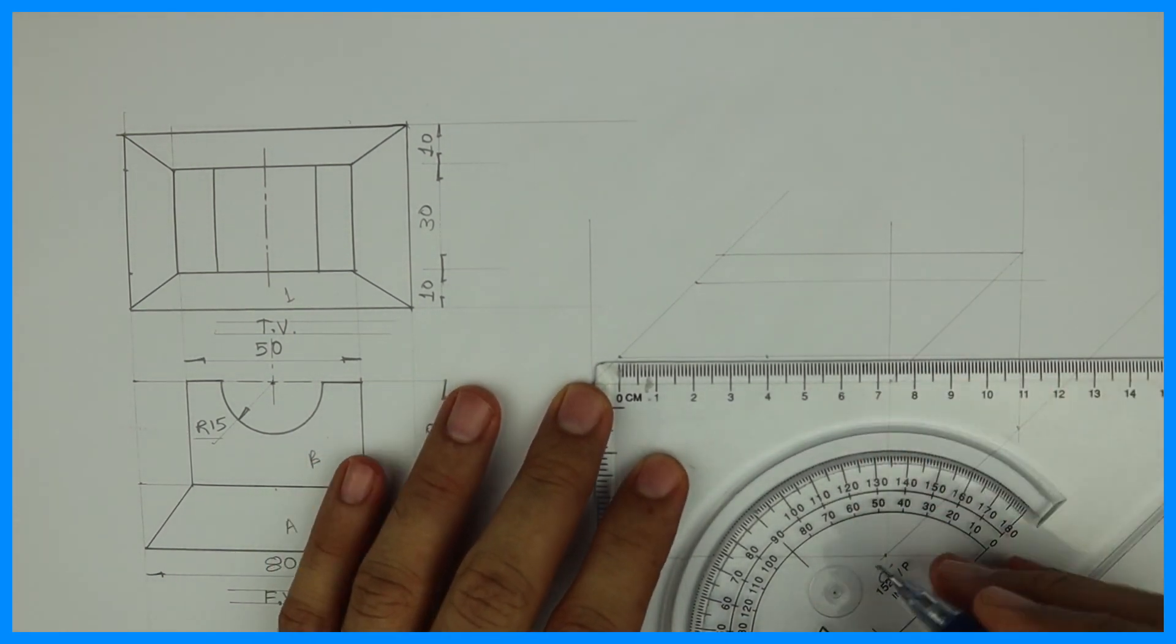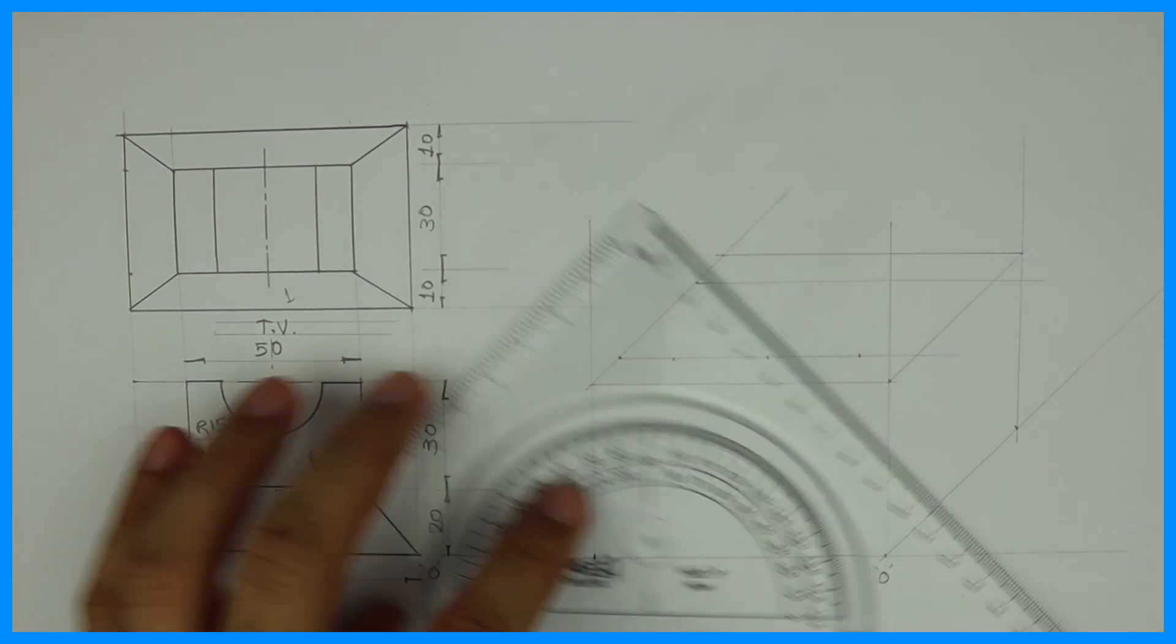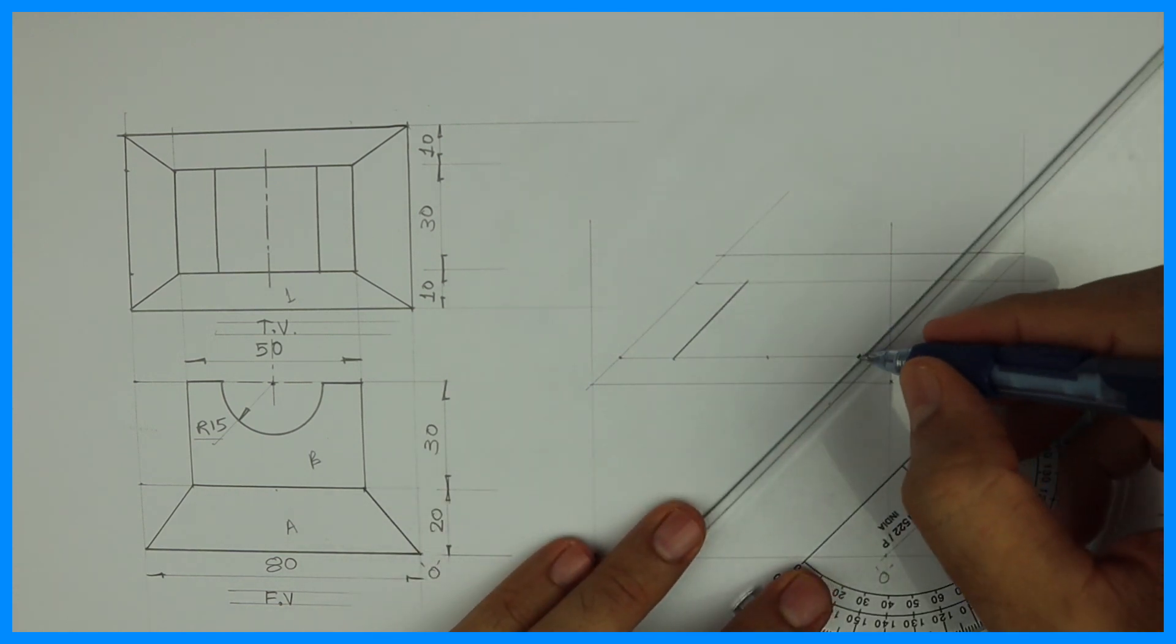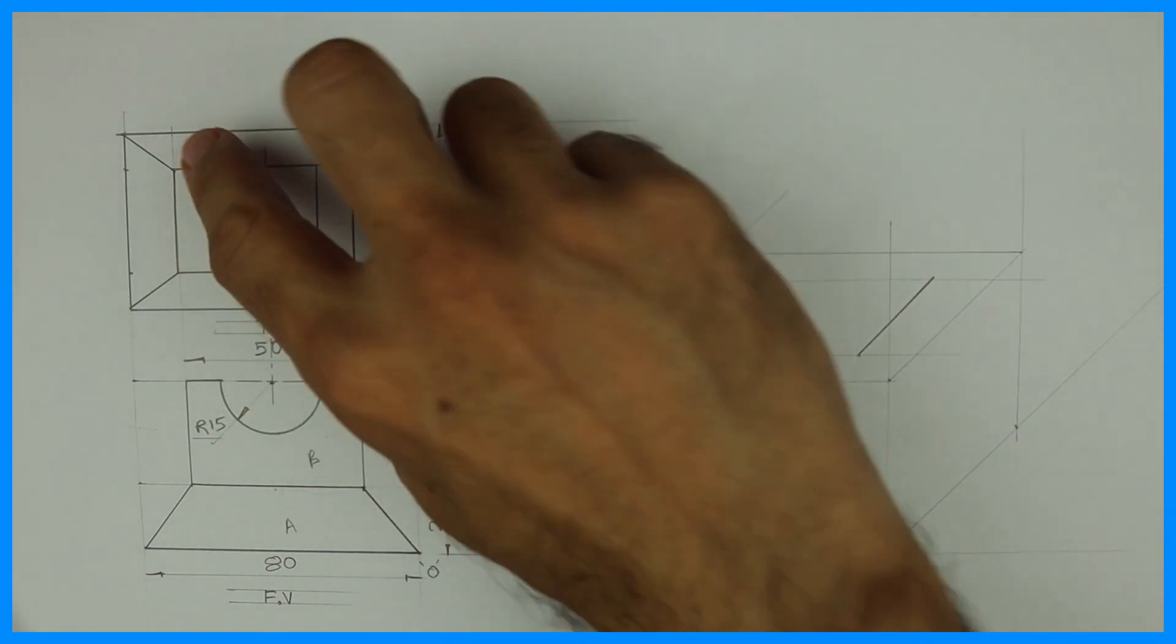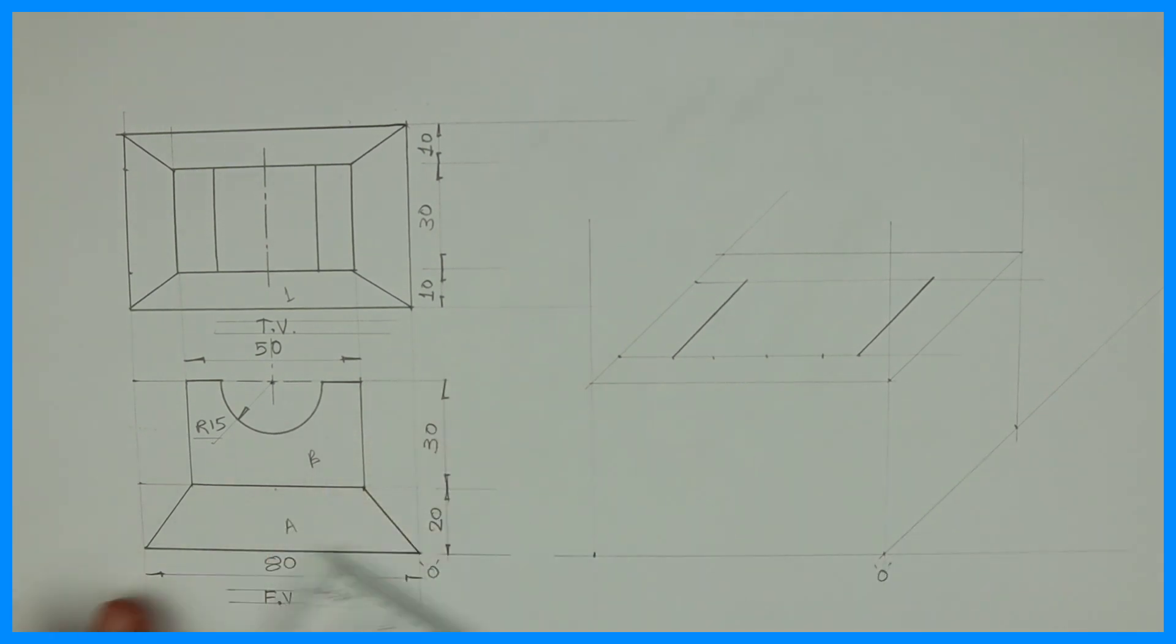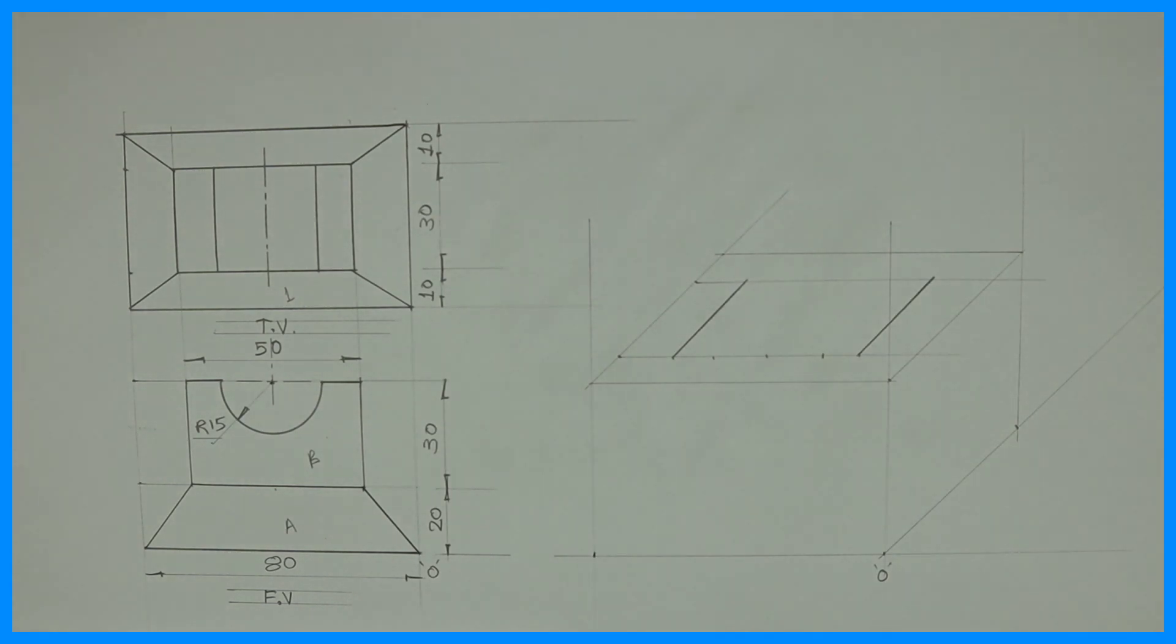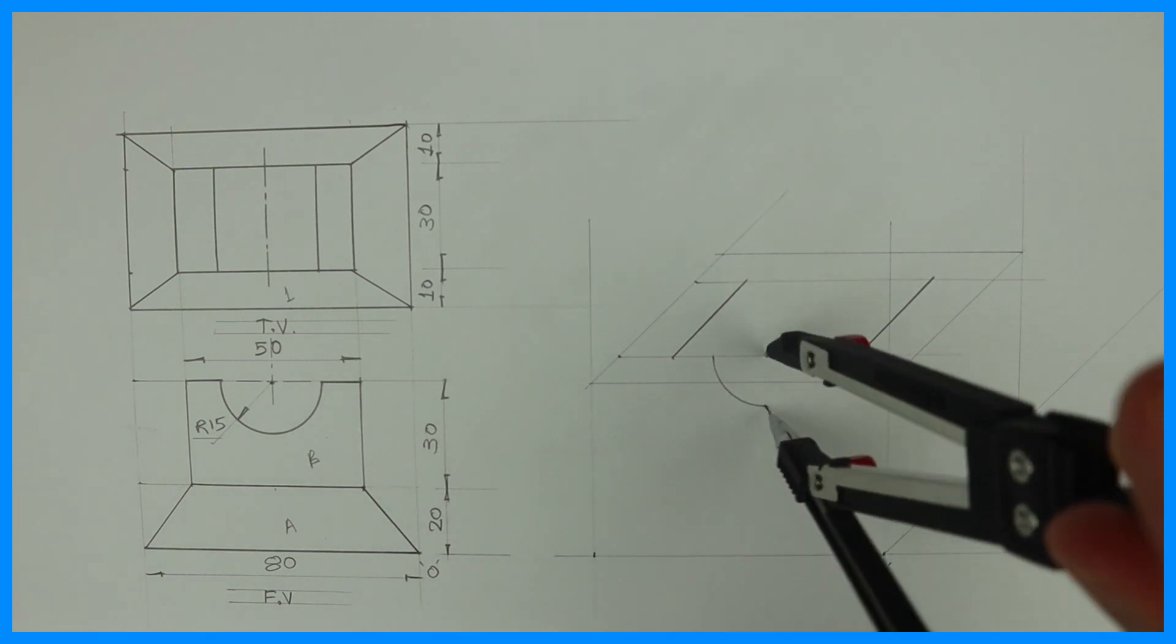Now I'll take midpoint of this, which is 40. And I'll take 25, 25 on both the sides. After that, I'll take 30, 30 behind. See this, this is 30, 30. Now if you see, radius 15. From center, we'll cut 15, 15. So we can draw those remaining two lines also. And we can draw circle also. We'll take radius 15. And we'll draw a circle.